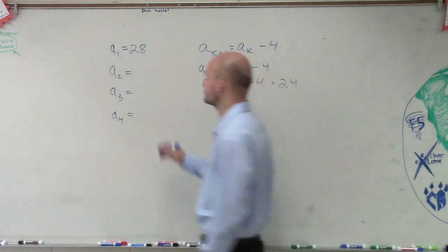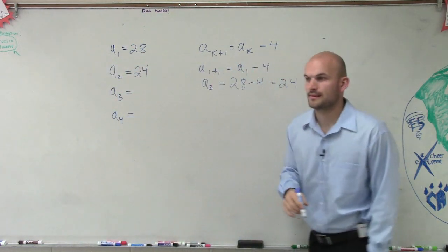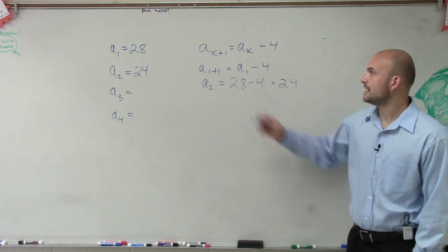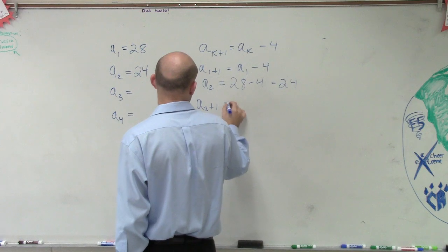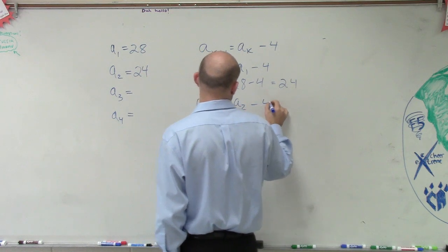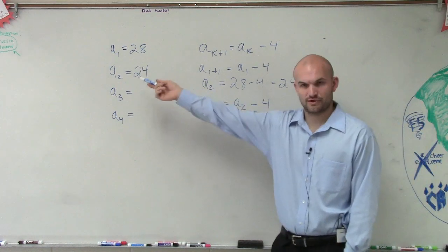So now we know A sub 2 equals 24. Now, let's put a 2 in for the k. So A sub 2 plus 1 equals A sub 2 minus 4. Well, do we know what A sub 2 is now? 24.